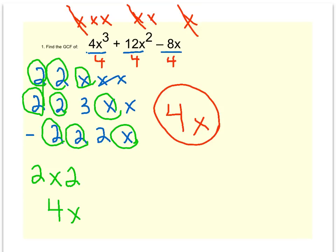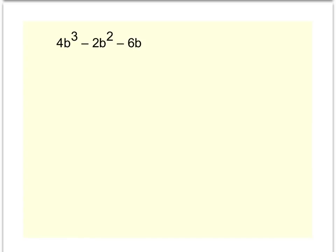Let's try another problem. This one is 4b³ - 2b² - 6b. Again, there's three terms, and we want to see what can come out of all three. We'll have to look at the numbers, 4, 2, and 6, and also at the letters, b³, b², and b. It helps me to write out b³, b², and b.